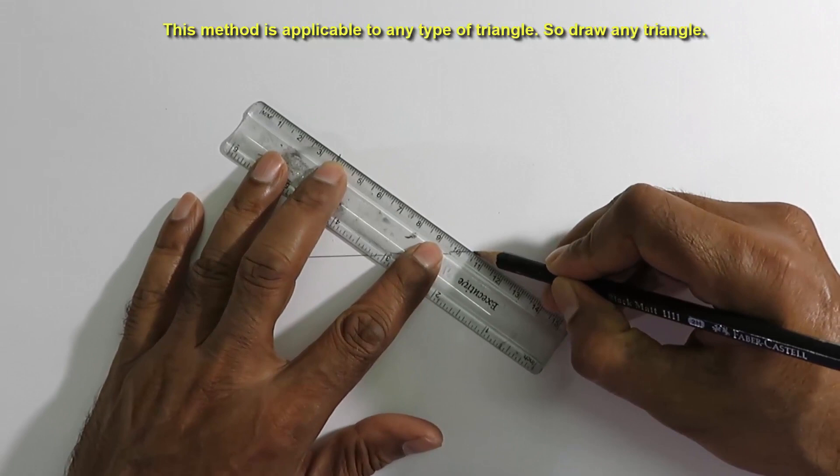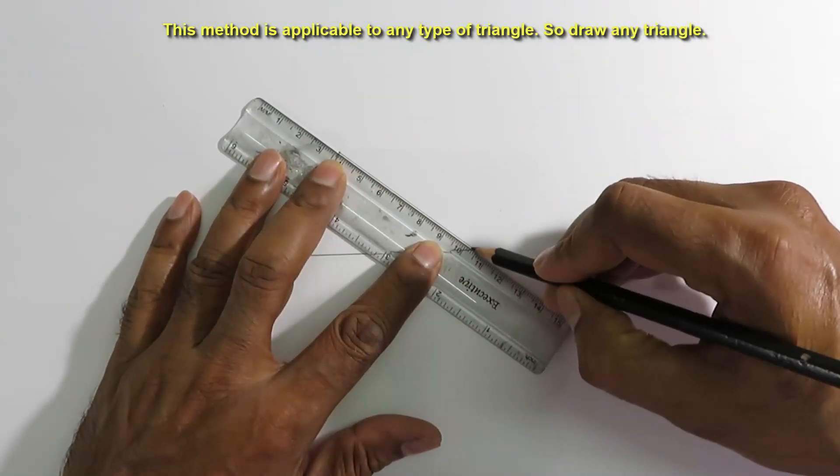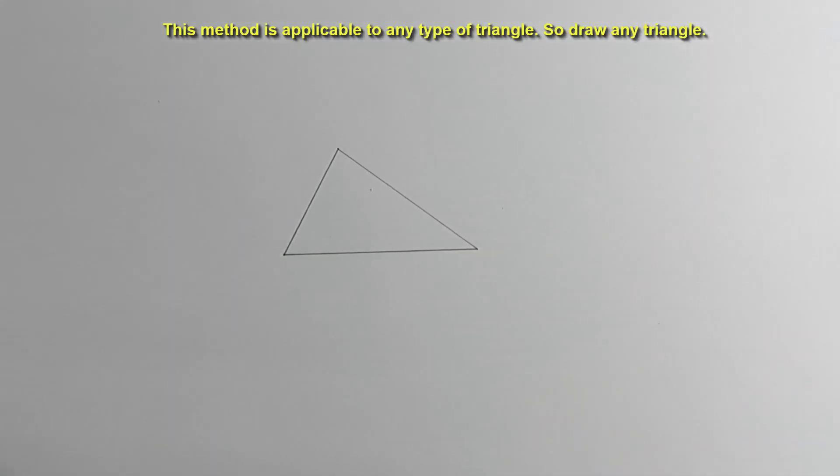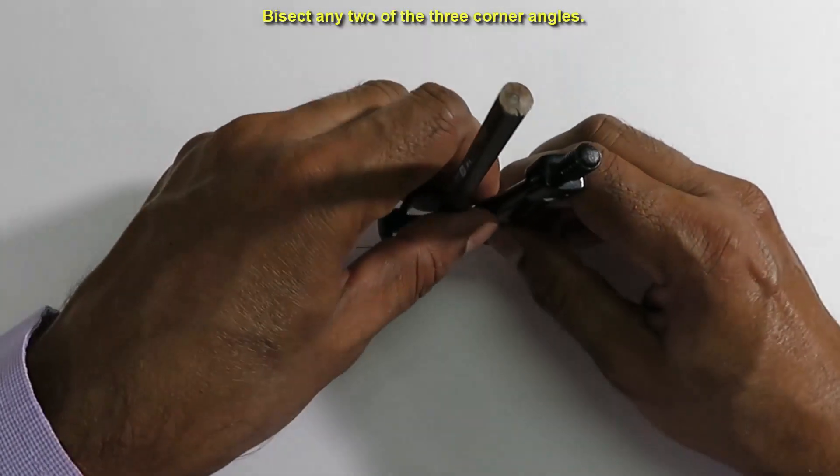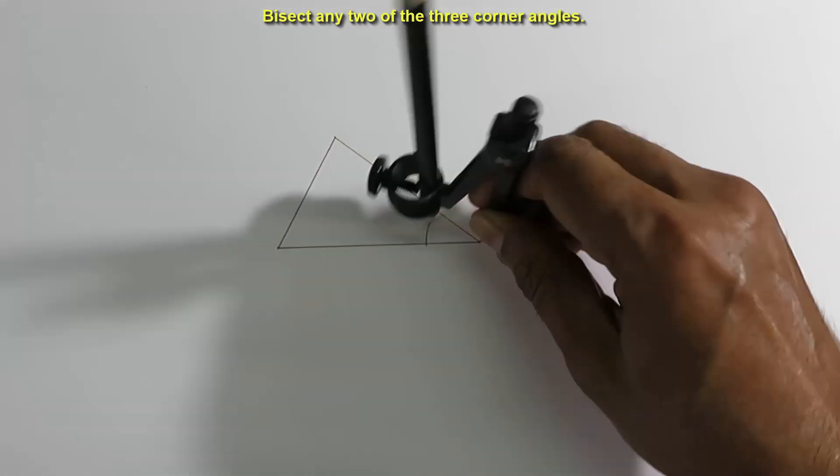This method is applicable to any type of triangle. So draw any triangle. Bisect any two of the three corner angles.